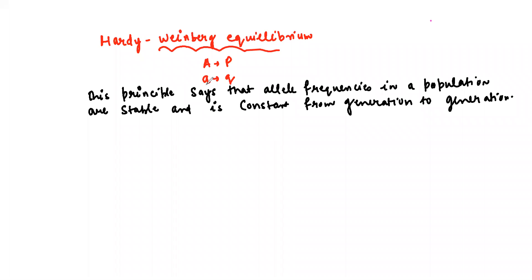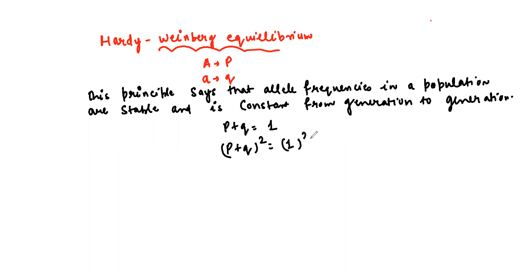A is p and a is q, so p plus q is equal to 1. If we square both sides, p plus q squared is equal to 1, giving us p² + 2pq + q² = 1.